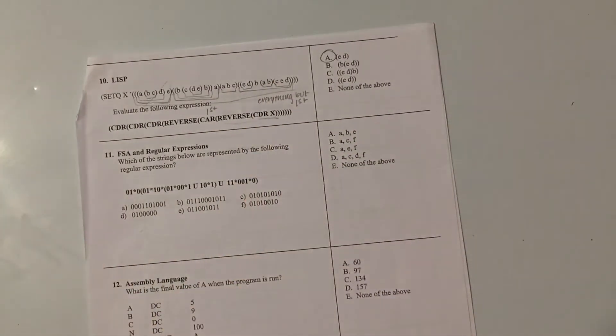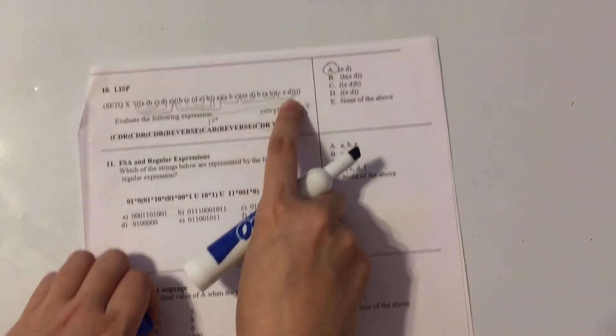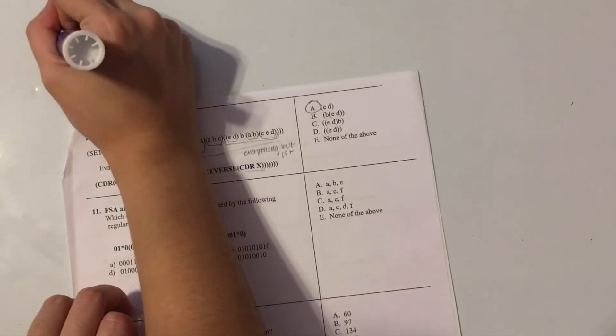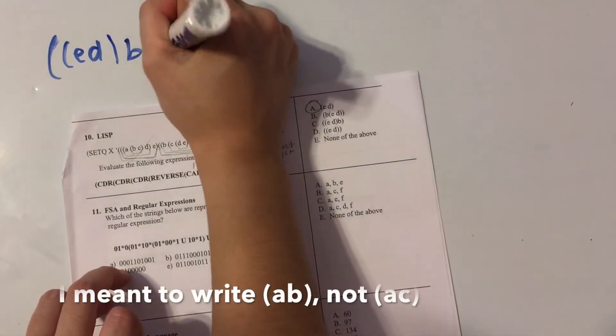Now we must reverse them. So we have this first item, which has a list E, D, and then the single element B, and then another list A, C.